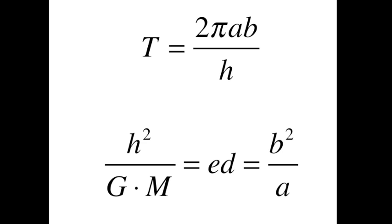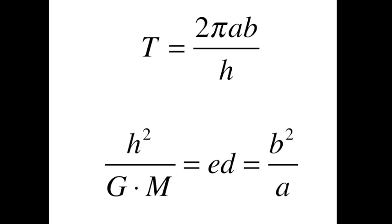Finally, using our two derived equations, we can prove Kepler's Third Law. This is done by squaring the period function, as seen in the above equation, and then substituting the b squared function, seen below, into the newly squared function.